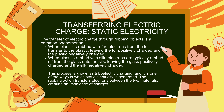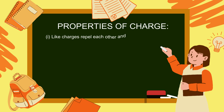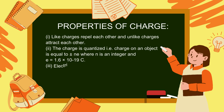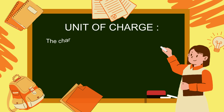Properties of charge: (1) Like charges repel each other and unlike charges attract each other. (2) Charge is quantized — the charge on an object is equal to ±ne, where n is an integer and e = 1.6 × 10⁻¹⁹ coulombs. (3) Electric charge is a scalar quantity. (4) The electric charge on a system is always conserved.